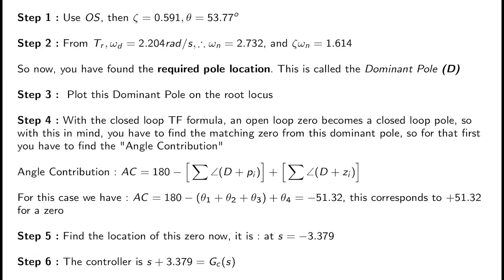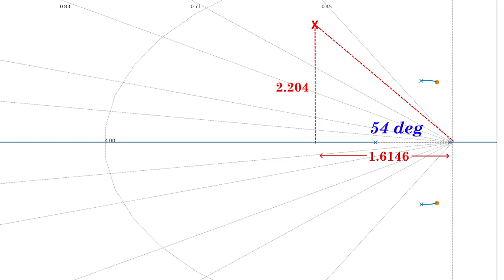From those parameters you obtain the location of the dominant pole. You compute zeta·omega_n and omega_d, which become the x and y coordinates of the dominant pole. When plotted, you see zeta·omega_n on the x-axis and omega_d (the damped natural frequency) on the y-axis, along with the angle. This point is your dominant pole.